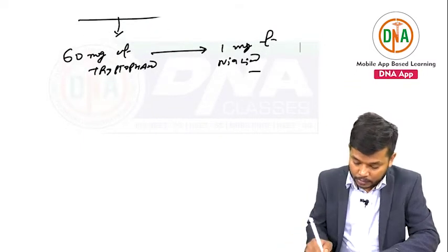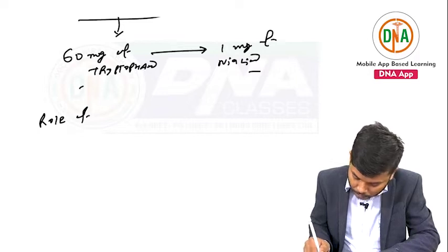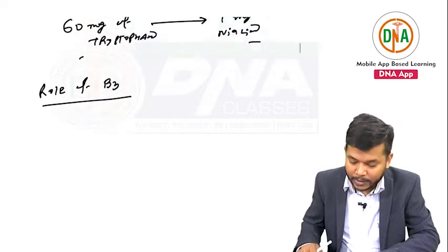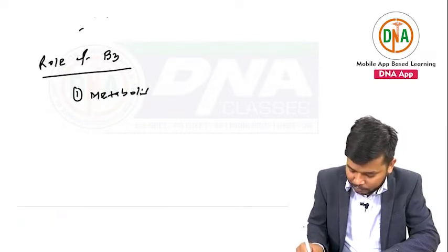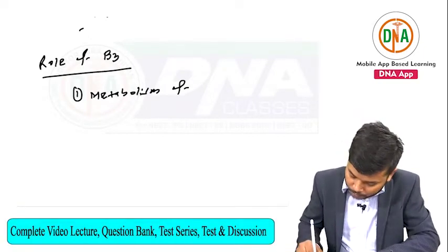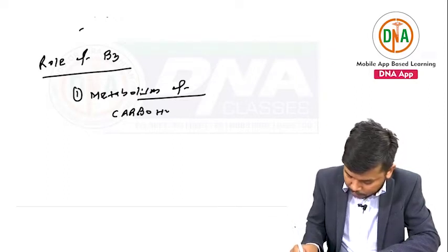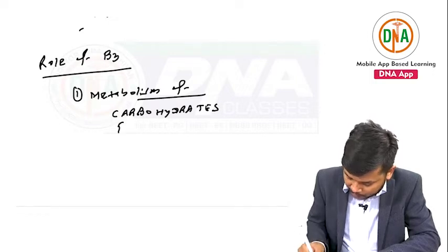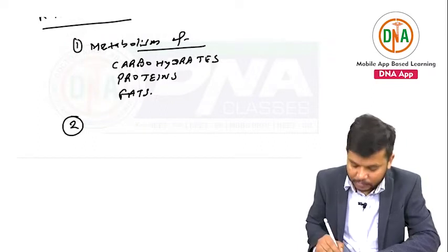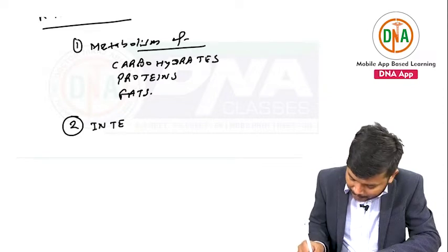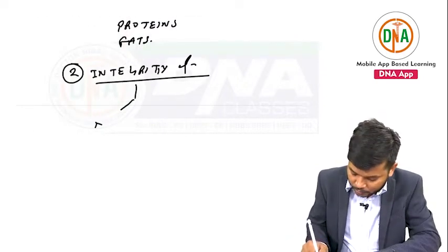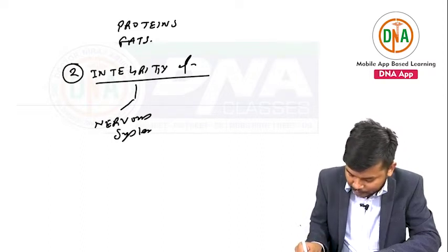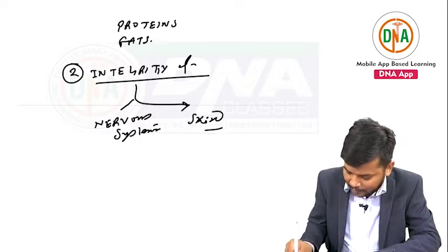Now the question is: what are the roles of vitamin B3 in our body? First, it helps in metabolism — it aids in the metabolism of carbohydrates, proteins, and fats. Second, it maintains the integrity of three systems in our body: the nervous system, the skin, and the intestine.